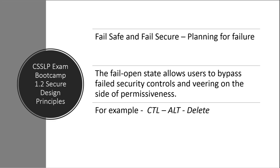With fail open, if there is a failure, it's not going to shut down the whole system — it should leave some options available. This strategy is useful, for example, with authentication in a healthcare application where we don't want to lock someone out immediately if they're already authenticated; we may want to limit access instead. A good physical example: if the power goes out and we have electromagnetic doors, the magnet should release so we don't lock people in. If a door defaults to locked when the power is out, that could cause serious issues.